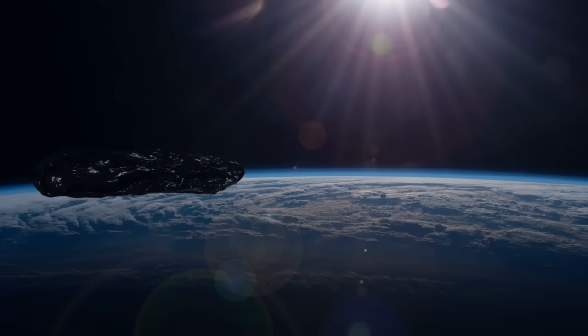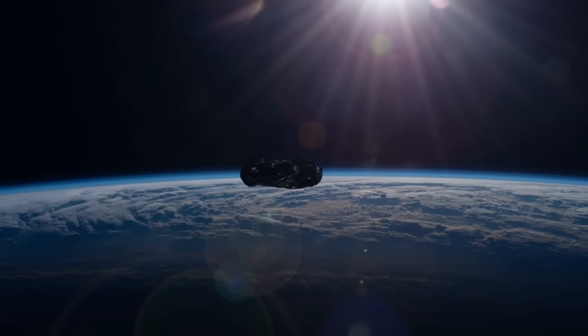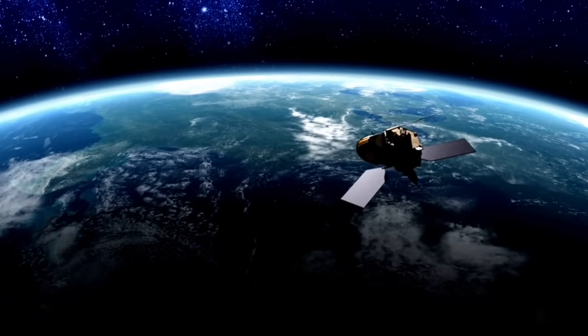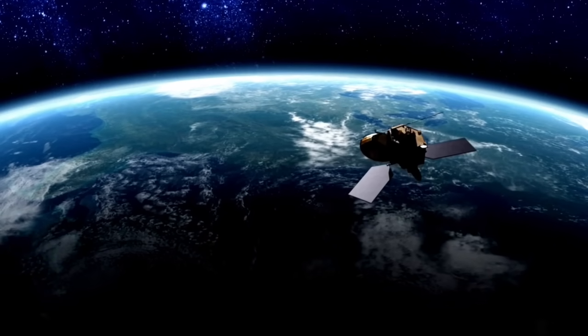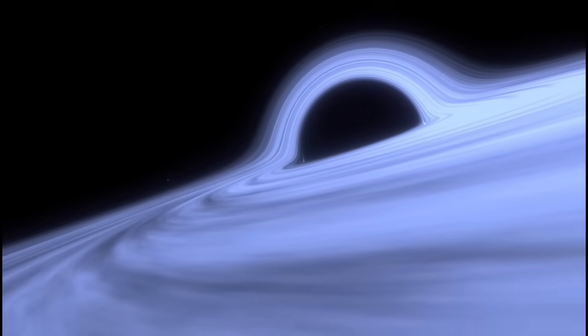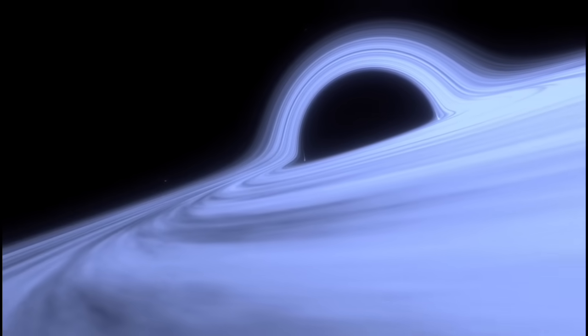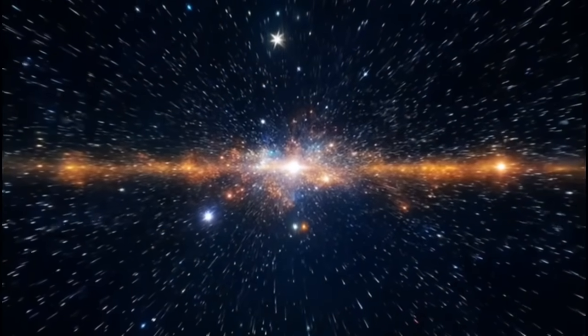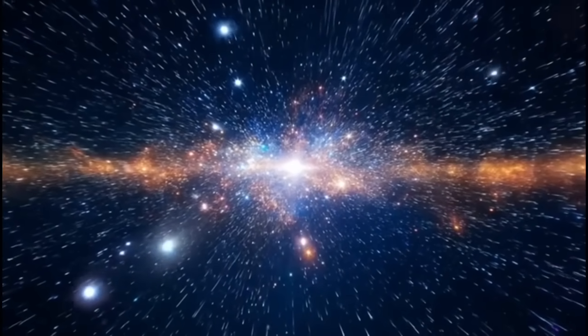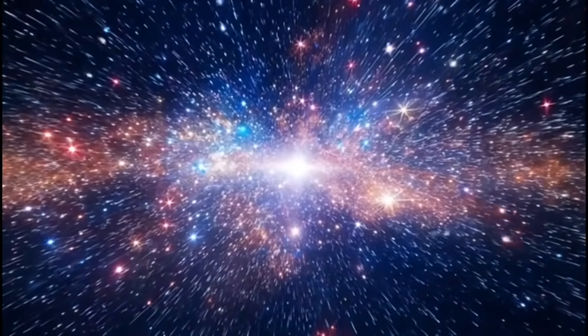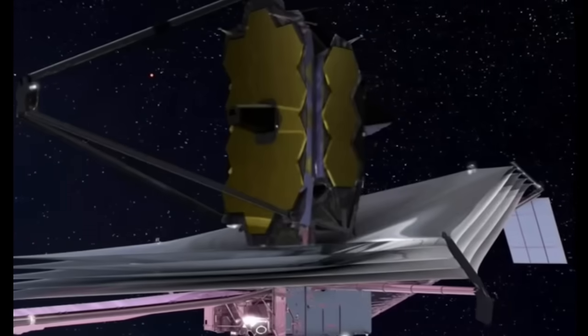NASA's James Webb Space Telescope has made a surprising discovery that has astronomers all over the world in awe. The telescope discovered the universe's earliest known galaxy a few weeks ago, but now it has found something even bigger: a supermassive black hole that is leaving its galaxy at an incredible 4 million miles per hour. Scientists and space enthusiasts have speculated a lot about the significance of this most recent discovery and what it means for our comprehension of the universe.